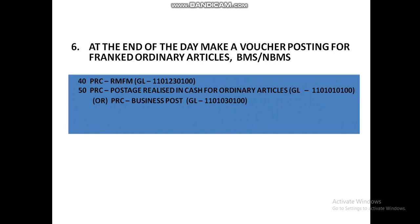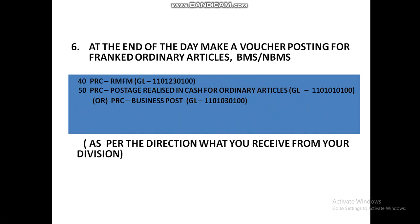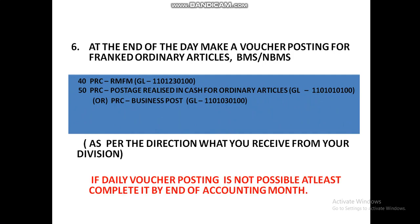Use 40 PRC RMFM and 50 PRC postage released in cash for ordinary articles, or PRC business post, as per the direction you receive from your division. In our division in 2019, we posted PRC RMFM and 50 PRC business post, but last financial year we changed it to PRC postage released in cash for ordinary articles. It is up to your division head. If daily voucher posting is not possible, at least complete it by the end of the accounting month, that is, before the 5th of every month.